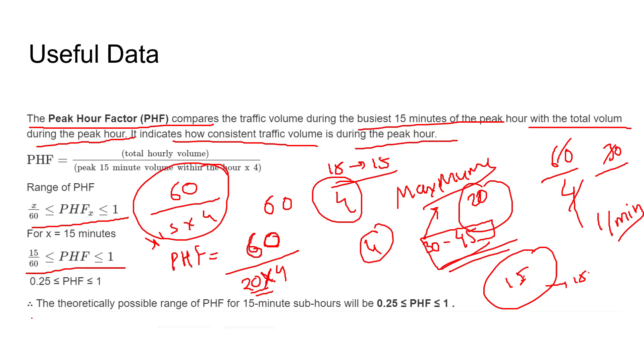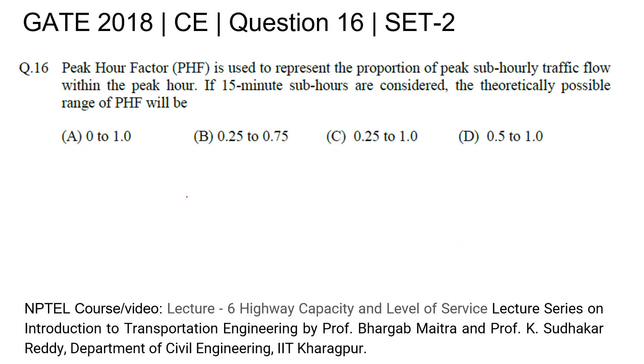And the minimum will be 15 upon 60, that is 0.25. The theoretically possible range of peak hour factor for 15-minute sub-hours will be 0.25 to 1. So our answer will become 0.25 to 1, that is option C. Thank you.